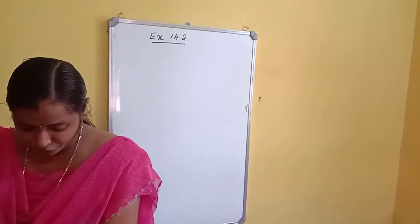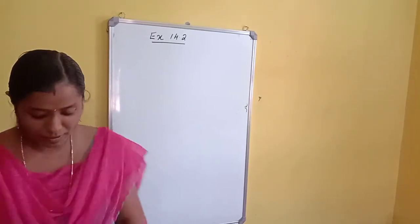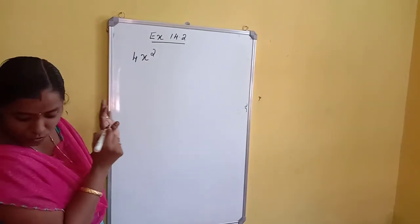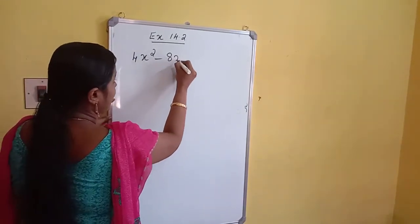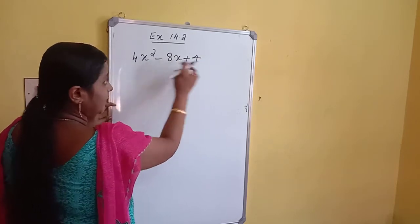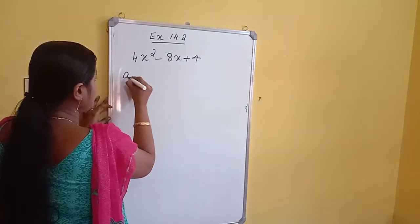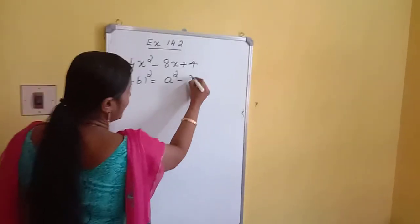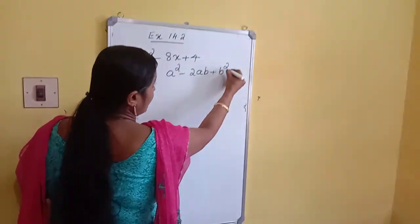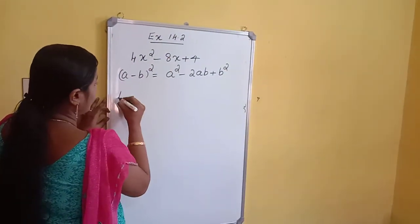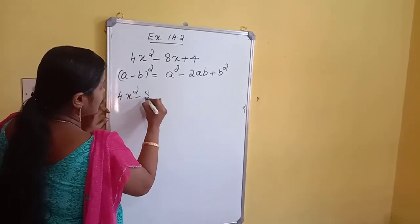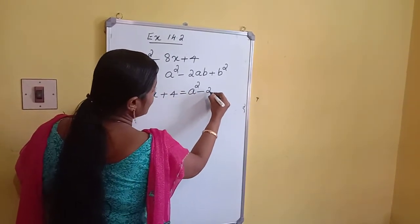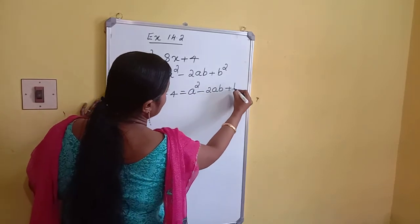The fifth problem is 4X squared minus 8X plus 4. There are three terms and one term is negative, so we use the identity: A minus B whole square equals A squared minus 2AB plus B squared. Comparing: 4X squared minus 8X plus 4 equals A squared minus 2AB plus B squared.